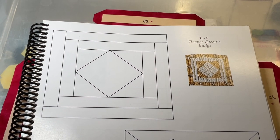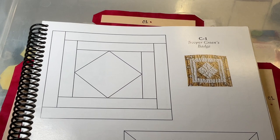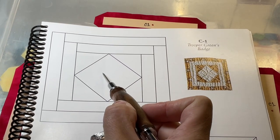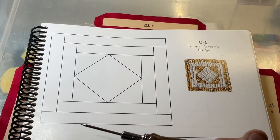Now we're starting the C row, and C1 has a center with a square and a square, surrounded by log cabin borders.